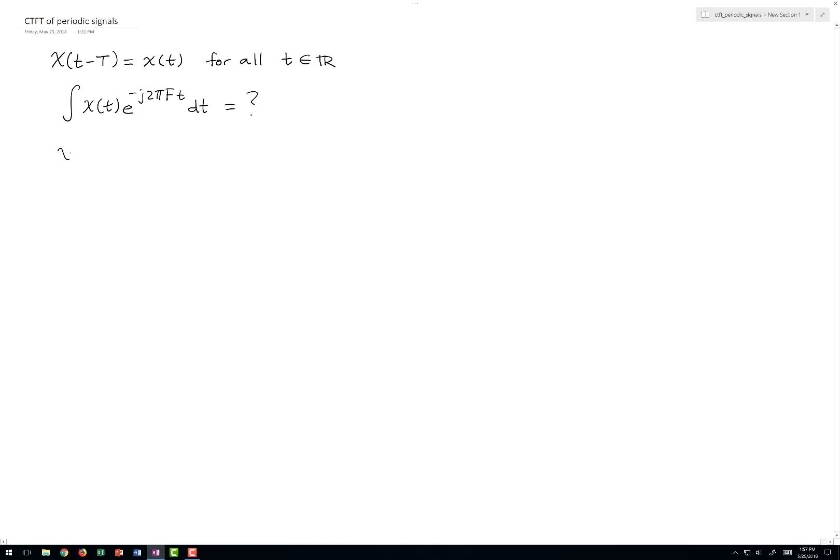One of the things we know about periodic signals is that we can expand them in a Fourier series, which in the case of the exponential Fourier series looks like this, where the coefficients in the series are calculated using a formula like this.